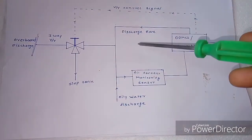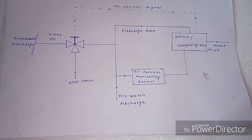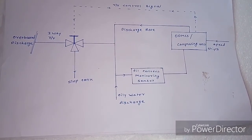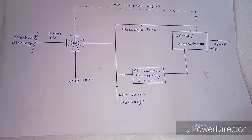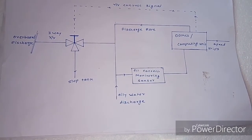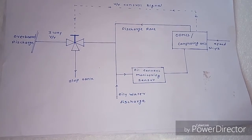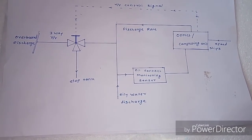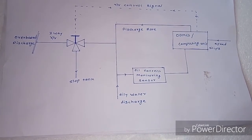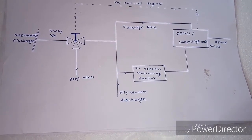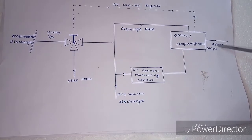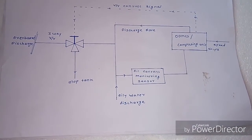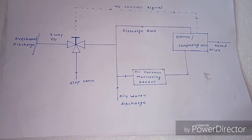Sheave speed and discharge rate are used for IRD — that is, Instantaneous Rate of Discharge. As per MARPOL, the discharge rate should be less than 30 liters per nautical mile. These two parameters — sheave speed and discharge rate — are in your hand to control the discharge rate.